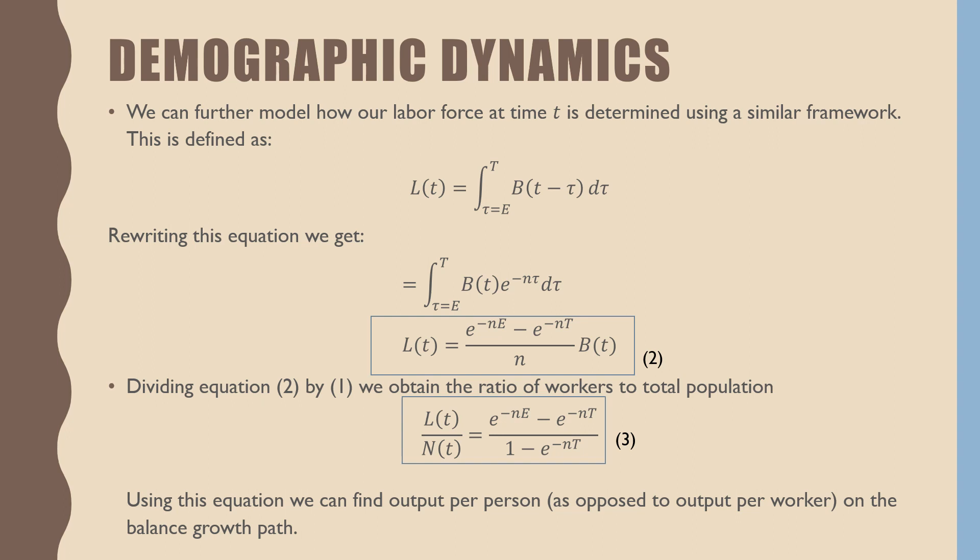Rewriting this equation, we follow the same steps, and we get equation 2, where our labor force at time t is equal to e^(-nE) minus e^(-nT) all over n times the number of births at time t. If we were to divide equation 2 by equation 1, we obtain the ratio of workers to total population, equation 3. Using this equation, we can find output per person as opposed to output per worker on the balanced growth path.